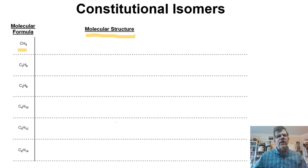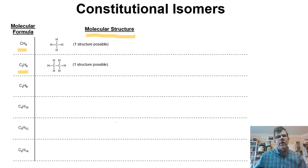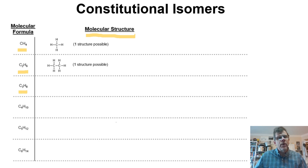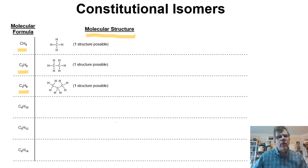For CH4, there is only one possible structure — carbon in the middle with four bonds and four hydrogens. For two carbons, there is also only one way to put them together. The same holds for three carbons — there is only one way, a linear zigzag V-formation. So for one, two, and three carbons, only one structure is possible.